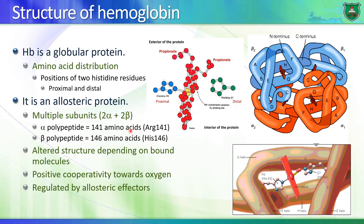Hemoglobin is an allosteric protein, meaning it has more than one structure. These two structures are known as the T state (taut) and the R state (relaxed). It is composed of multiple subunits — a primary feature of allosteric proteins is that they must have a quaternary structure. We have two alpha subunits and two beta subunits: alpha 1, alpha 2, beta 1, and beta 2. The alpha polypeptide is composed of 141 amino acids, the last one being arginine.